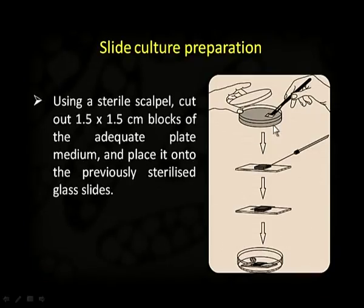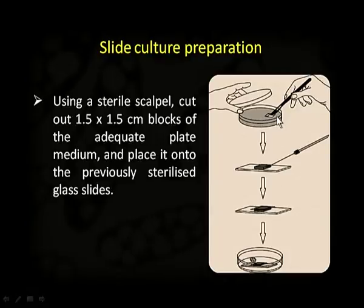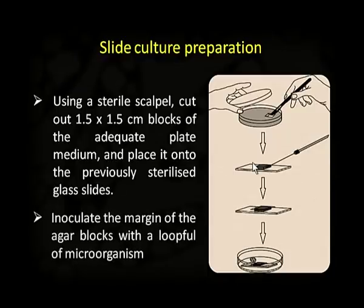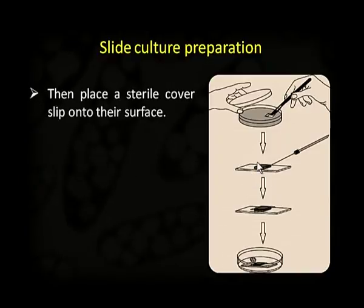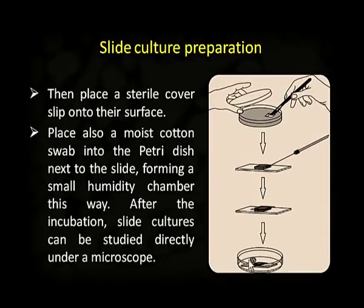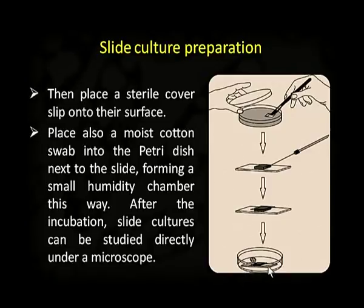Let us discuss slide culture preparation. Using a sterile sharp knife, we cut 1.5 by 1.5 centimeter blocks of adequate plate medium and place them onto a previously sterilized glass slide. In the next step, we inoculate the margin of the agar blocks with a loopful of microorganism. Then we place a sterile cover slip onto their surface. After that, we place a moist cotton swab into the petri dish next to the slide, which forms a small humidity chamber. After incubation, slide cultures can be studied directly under the microscope.